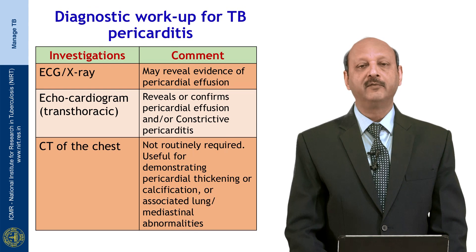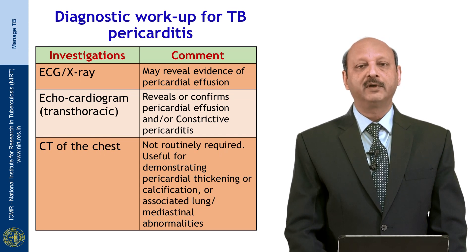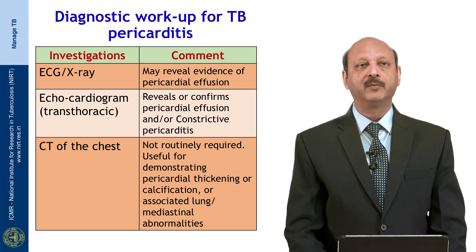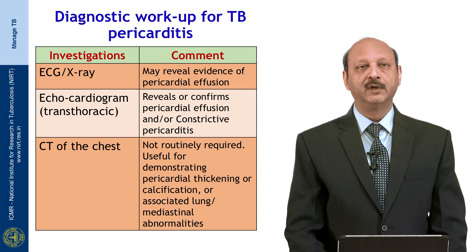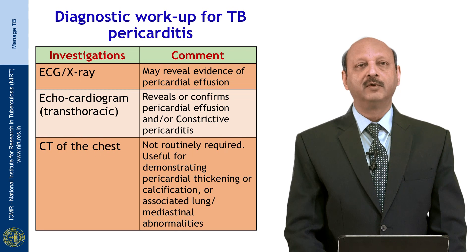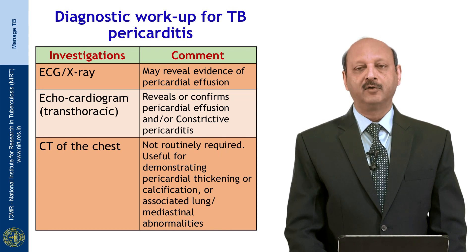For pericarditis, initial investigations are ECG and chest X-ray, which may help in revealing pericardial effusion for the first time. Echocardiography may reveal or confirm pericardial effusion and is of use even for constrictive pericarditis. CT scan of the chest for pericardial effusion is not routinely required; however, it may be useful for demonstrating pericardial thickening, calcification, or any associated abnormalities in the lung or mediastinum.